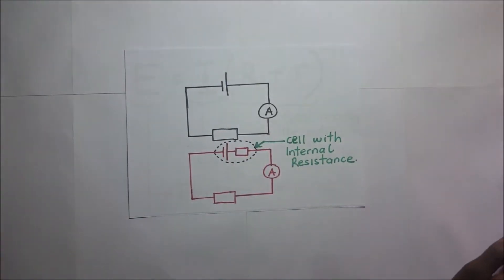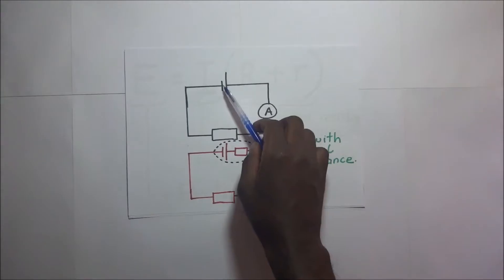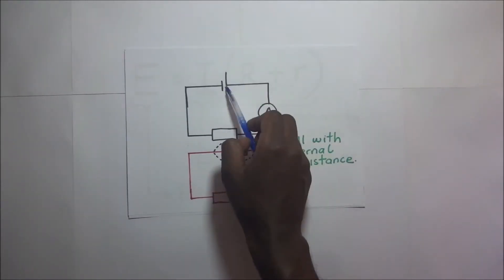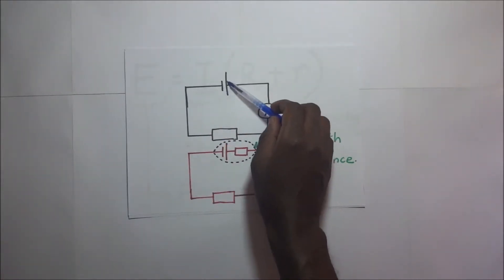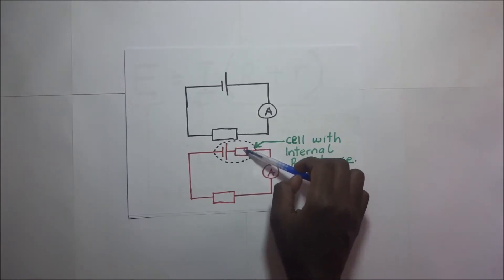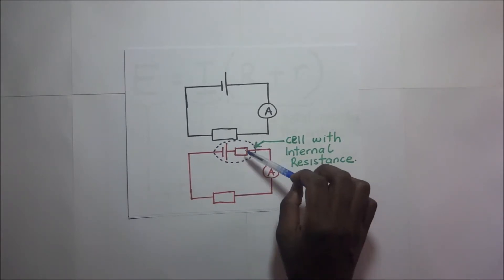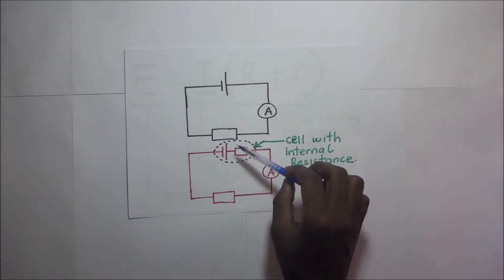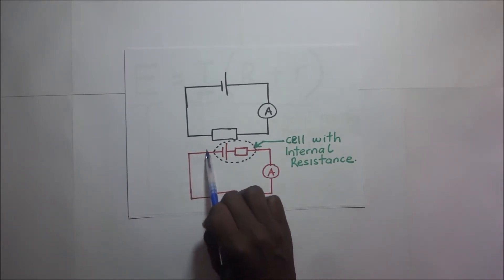Every cell has a certain level of internal resistance. The chemicals within the cell offer a certain resistance to current flow, and this resistance is called the internal resistance of the cell. Much as we may have resistors in the external circuit, inside the cell there is also resistance. We treat the internal resistance as though it is another resistor inside the cell, always in series with the other resistors in the external circuit.